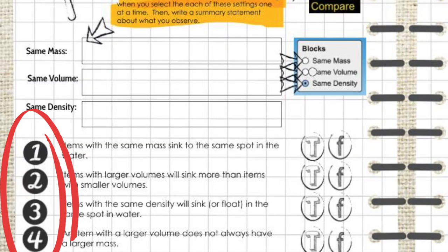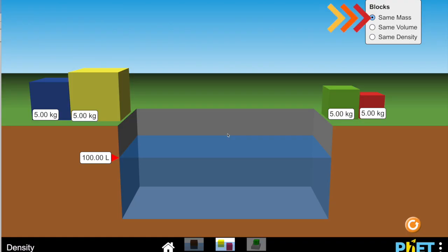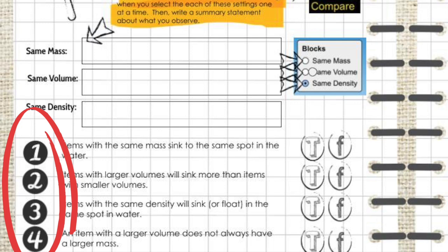For the next section, we're going to answer these four true and false questions using the simulator. So if it says same mass, you're going to go to the simulator and click the same mass section, and then manipulate the items on the page to help you answer the question. Repeat that for each of the true and false questions.